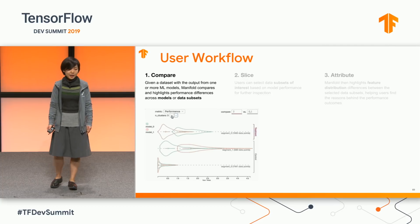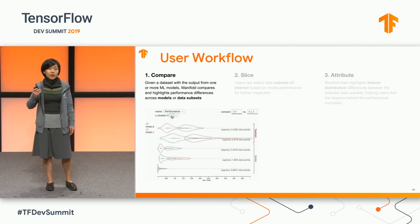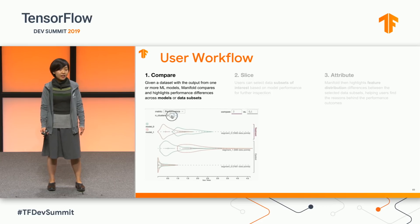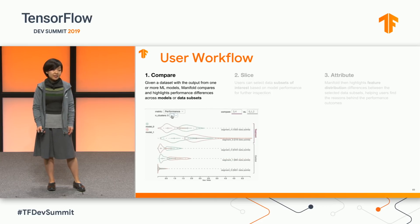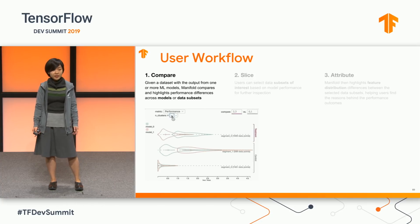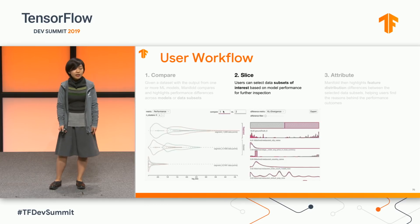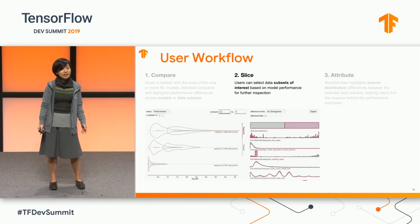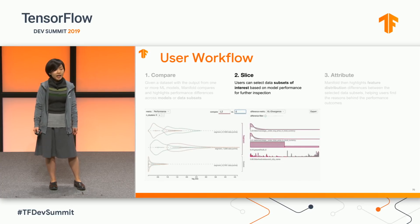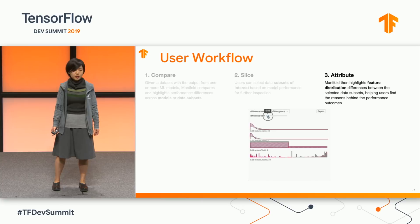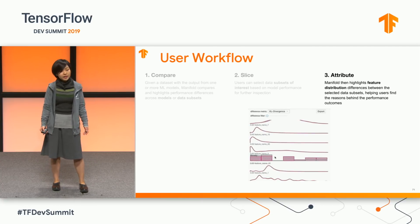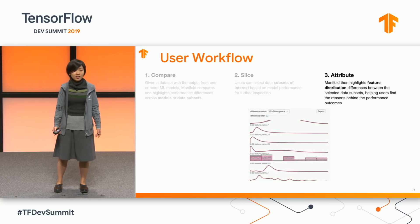Here's the workflow of using Manifold. The user connects Manifold to the output data set of several machine learning models. Manifold will automatically segment this data set into subsets, each containing data points with similar performance. Users choose the subsets of interest to compare against each other, and Manifold highlights the feature distribution differences between the two subsets, helping them diagnose the behavior of the performance outcome.